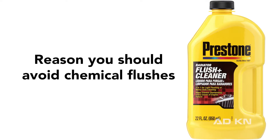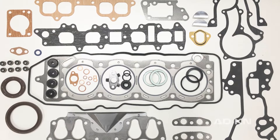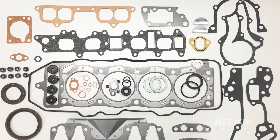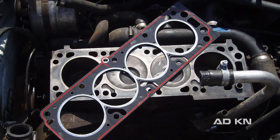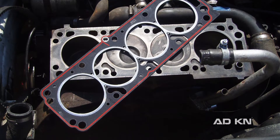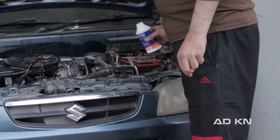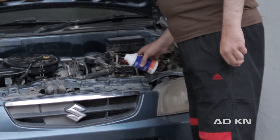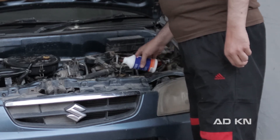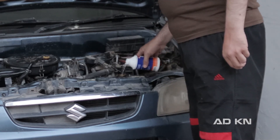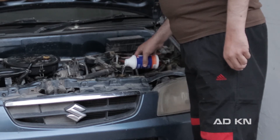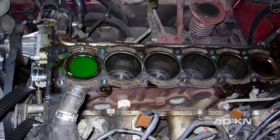For the first part: how chemical flushes can damage your cooling system. Car engines have different seals called gaskets; they are in many areas of your engine and cooling system. These chemical flushes are very strong chemicals — they can clean your entire cooling system of rust, but they also damage seals in your cooling system. If you keep using it you might get a gasket leak or something similar.